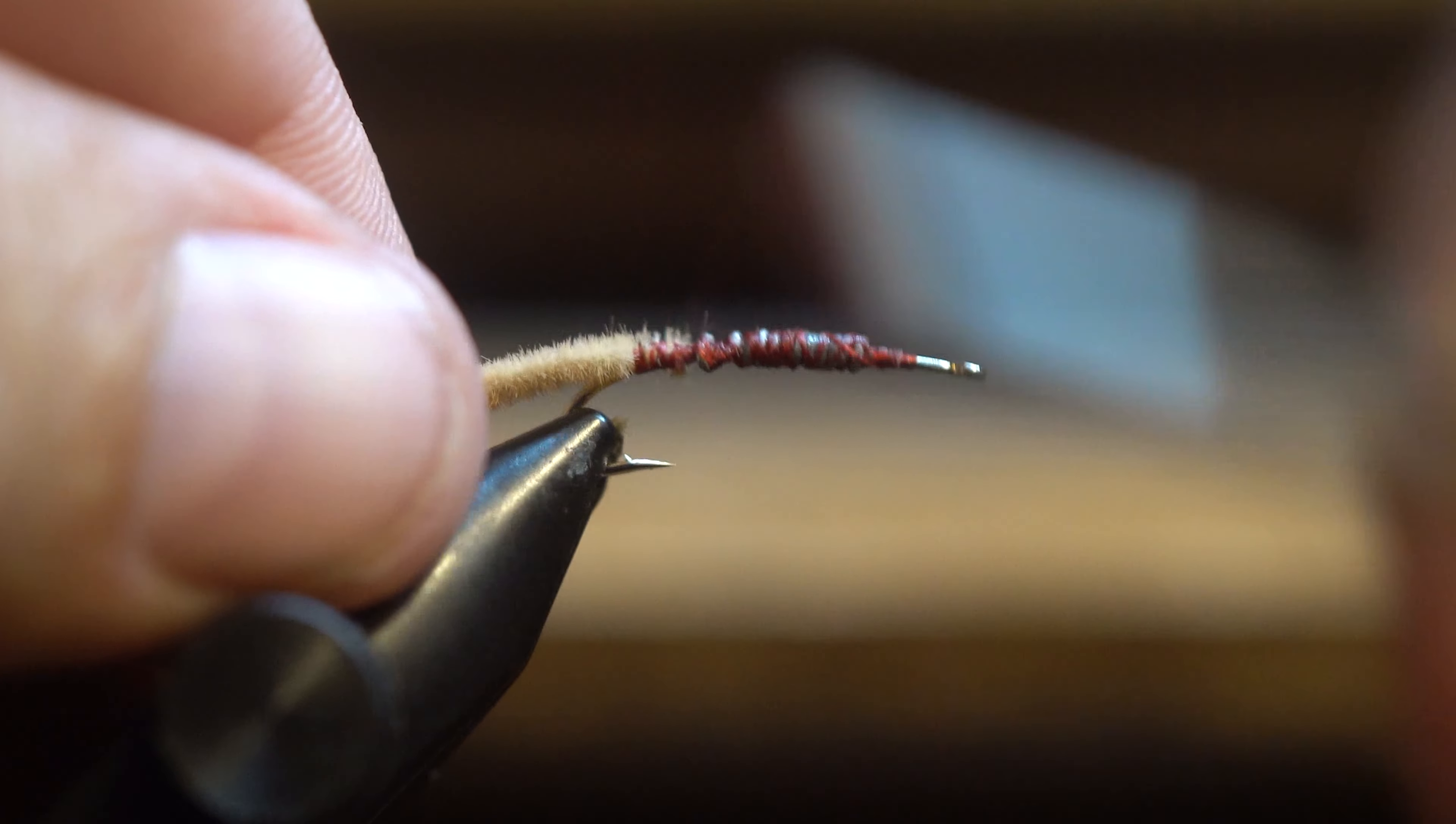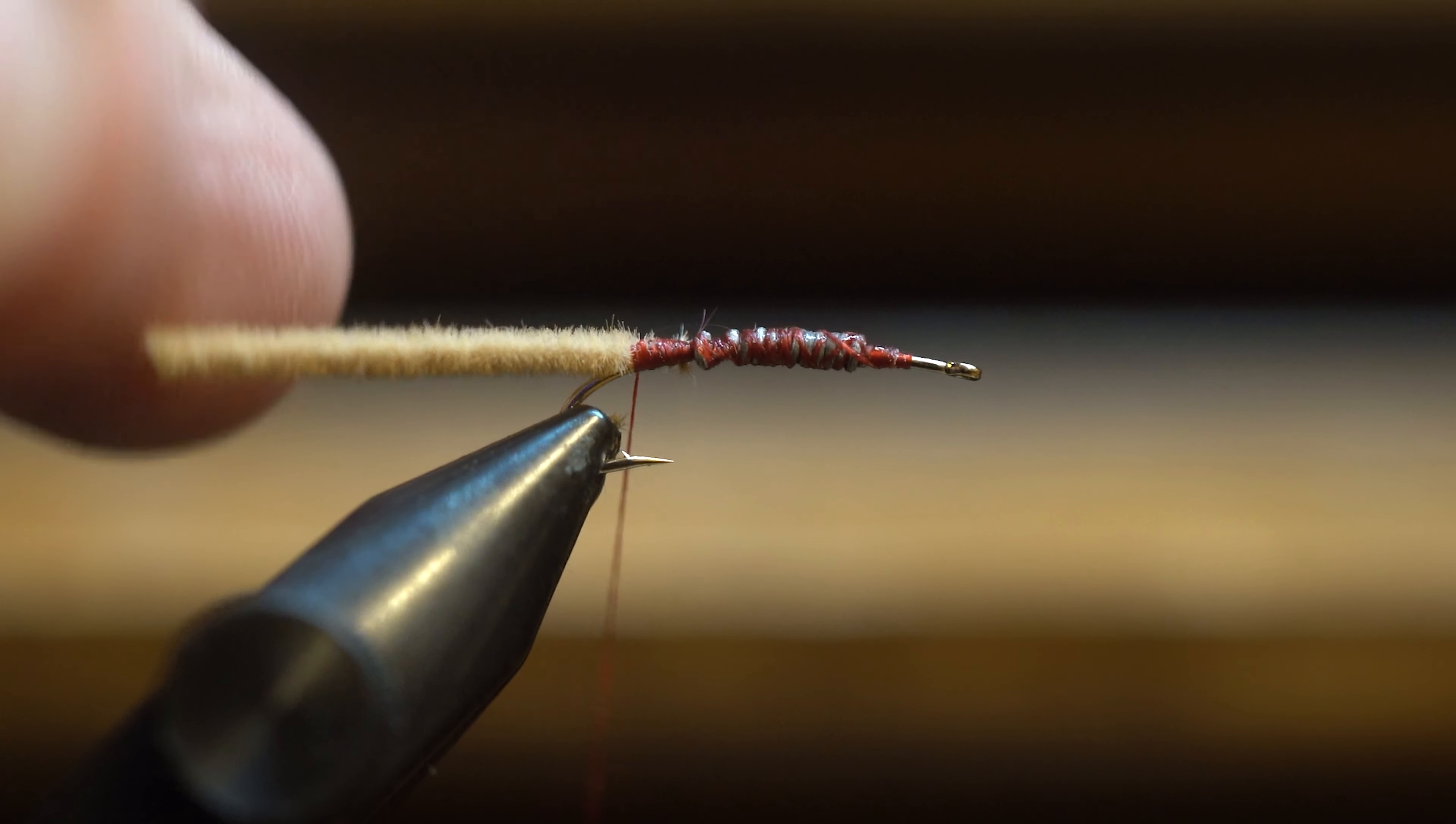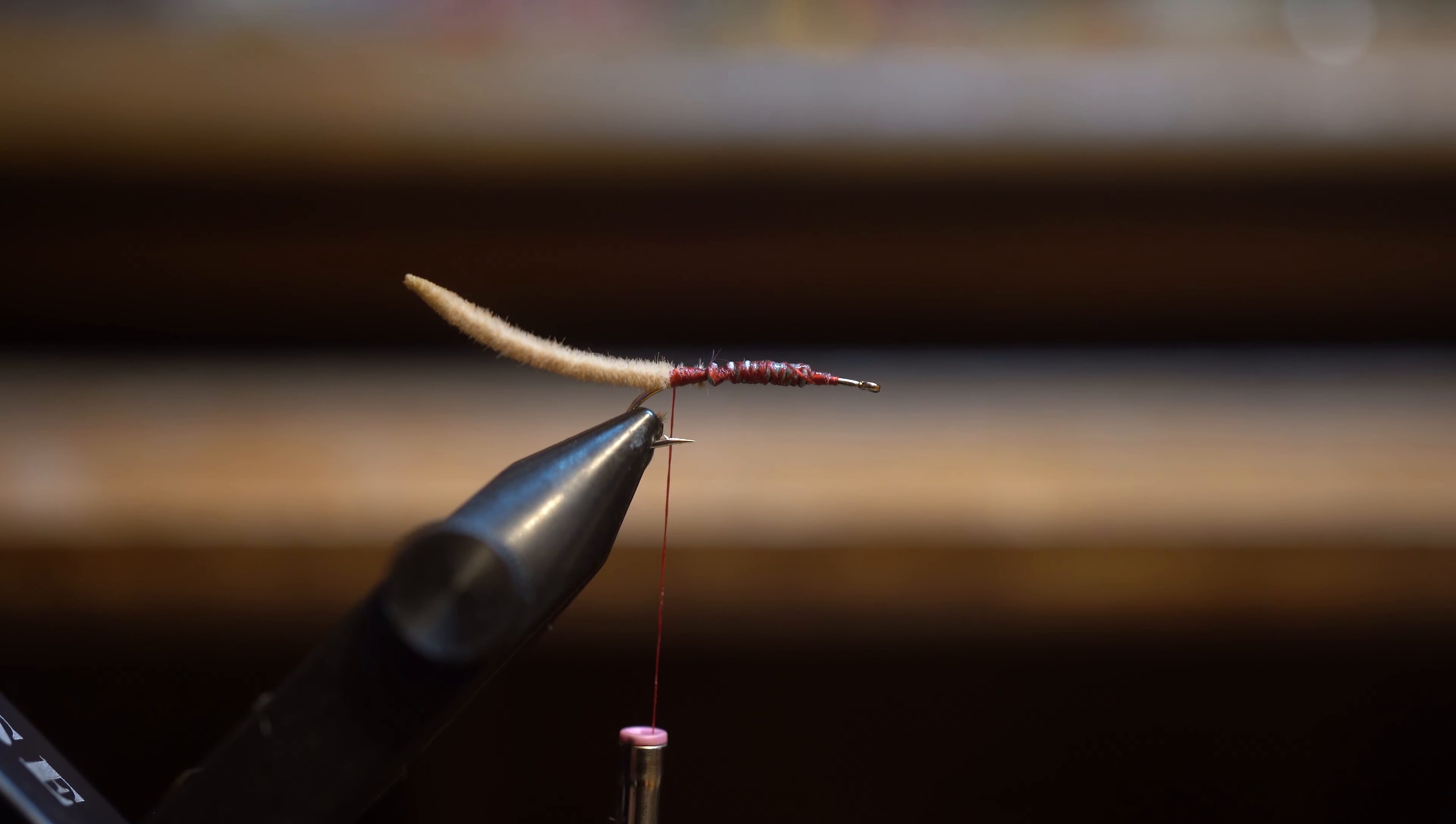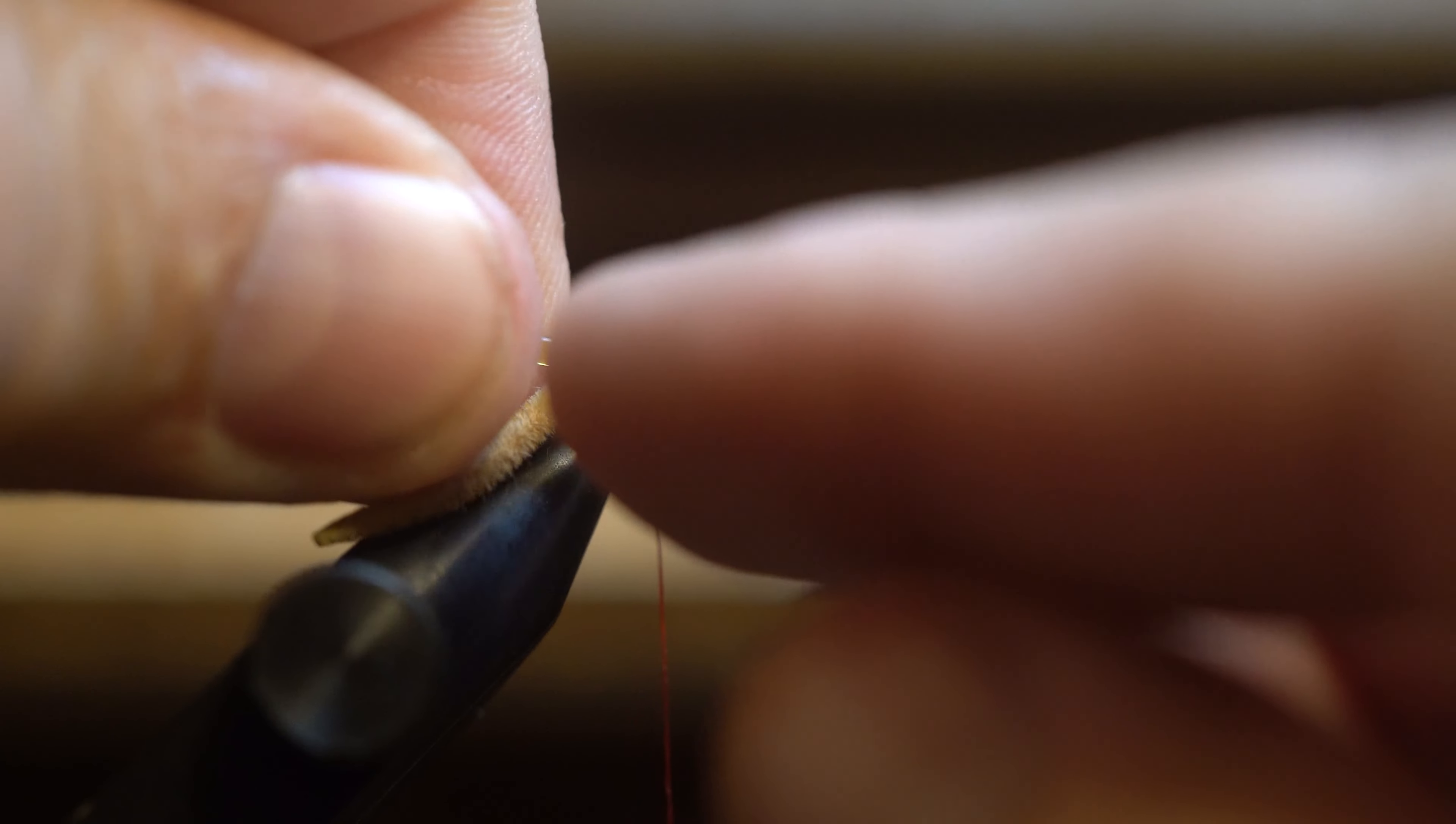So, the first material we're going to use is some ultra chenille, and it's the same type of chenille you use when you're tying just a regular San Juan worm. So, I'm going to go all the way to where this hook starts curving down, and I'm going to just attach my ultra chenille. So, wrap it on nice and tight, and then my worm is going to go to the point of the hook. So, I want this ultra chenille just a little bit longer than the length of my hook. Then, what I'm going to do is I'm going to get our trusty Bic lighter, and I'm going to burn the edge of that. So, now I've got a nice, pointy, natural tail for my worm.